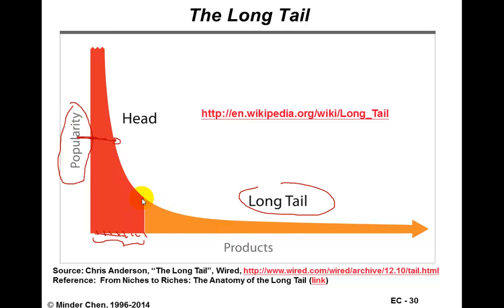The area under the curve indicates more or less the revenue generated by the sales of each item, assuming they have the same price. Certainly, some popular items could be more expensive or cheaper — it depends on the situation.